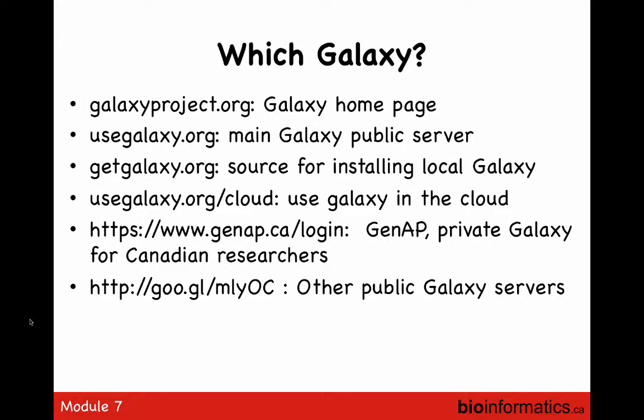You also have Galaxy on the cloud. We have a project called GenApp, developed here in Canada by me and a group at McGill and Sherbrooke. There are also several other public Galaxy instances around the world that are more specialized — some are packaged just for ChIP-seq, some for RNA-seq, and there is even a Galaxy for astrophysics, because Galaxy is basically a wrapper around the command line. So which Galaxy should you use?